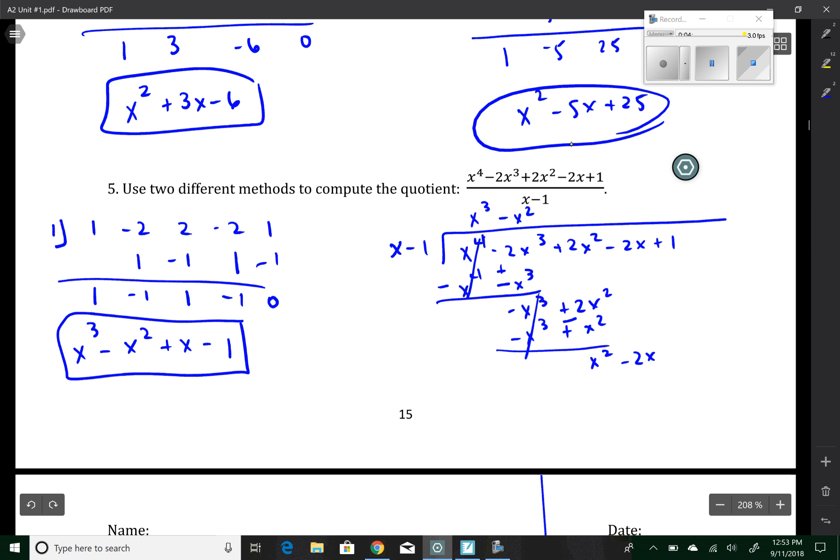Next thing we have here is a plus x. That gives me an x squared and a minus x. These cancel. That becomes a plus. Negative 1x and a plus 1. Minus 1 gives me the same thing twice. So when you subtract, they have a remainder of nothing. There's your answer in two different methods.